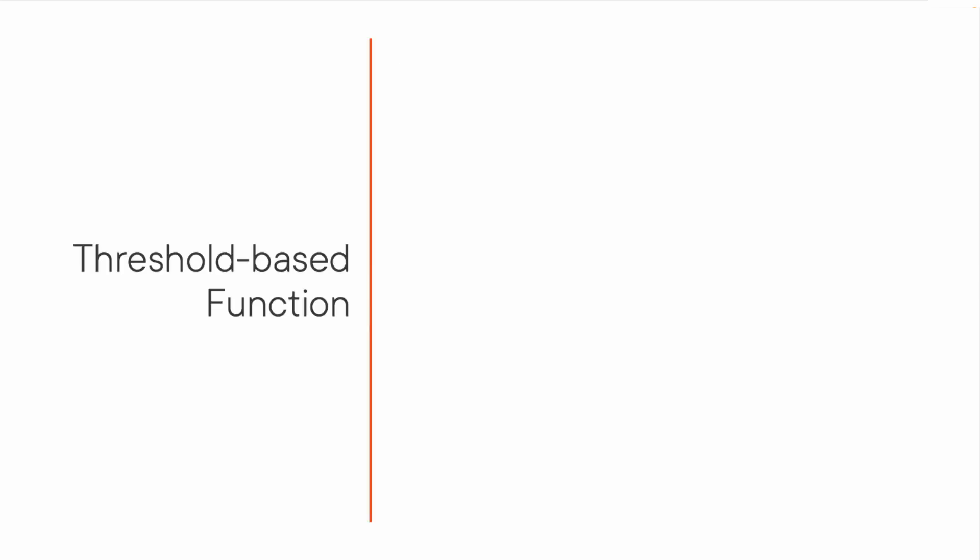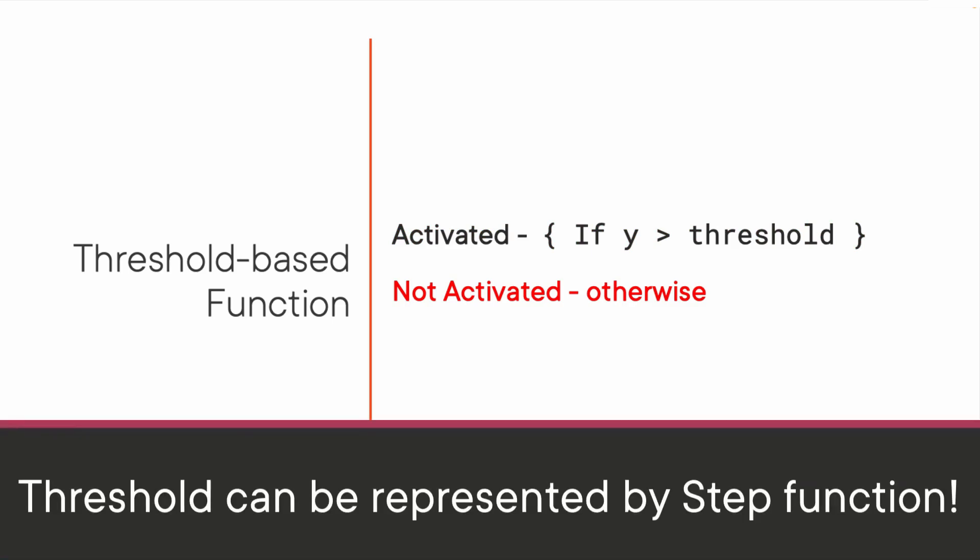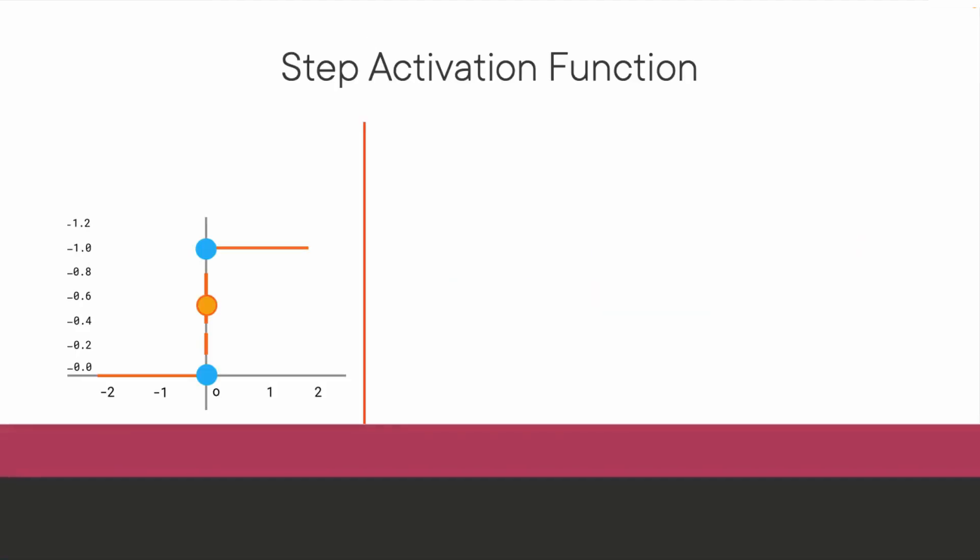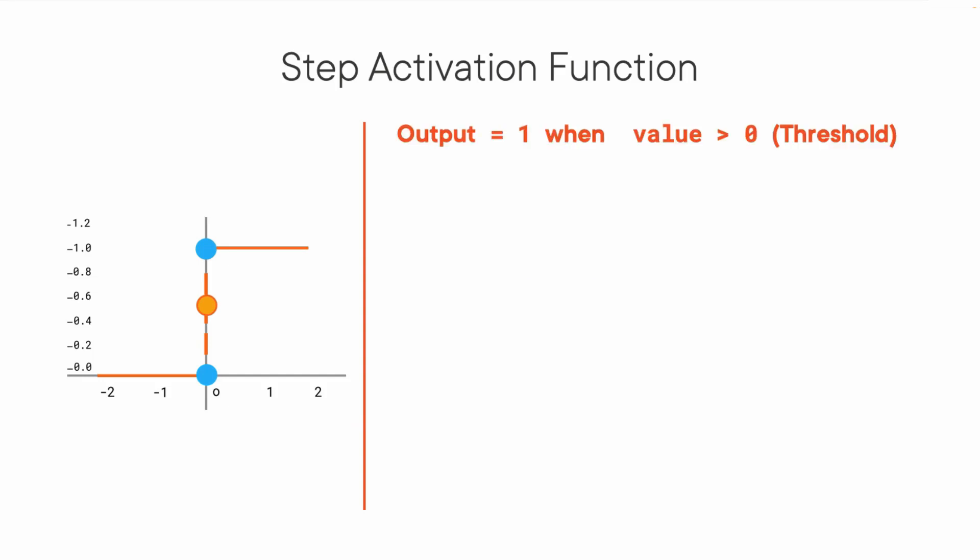So let's explore different activation functions available. The first thing that comes to mind is a threshold-based activation function. If the value of Y is above a certain threshold, declare it activated. If it's less than that, it's not. This could work. Here's a step function: its output is 1, which means activated, when value is greater than 0, otherwise it outputs 0, which means not activated.